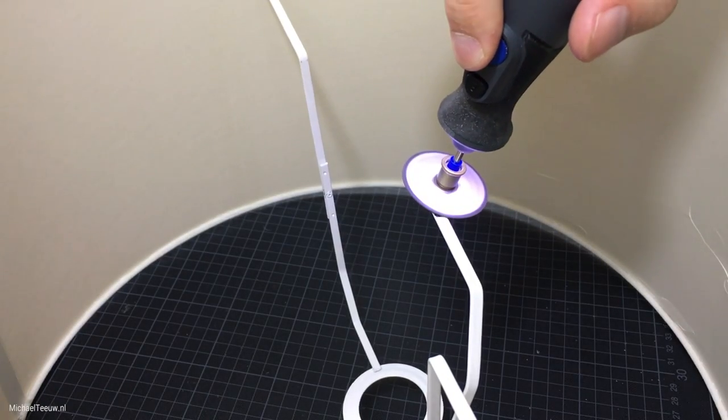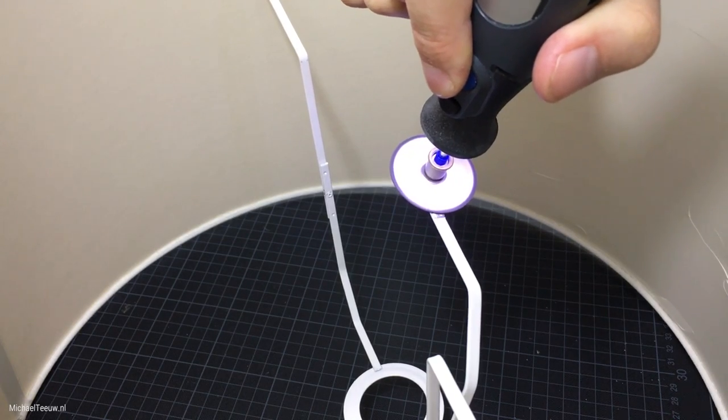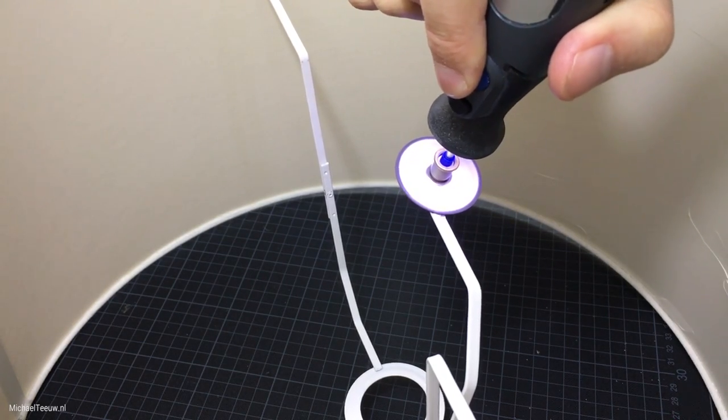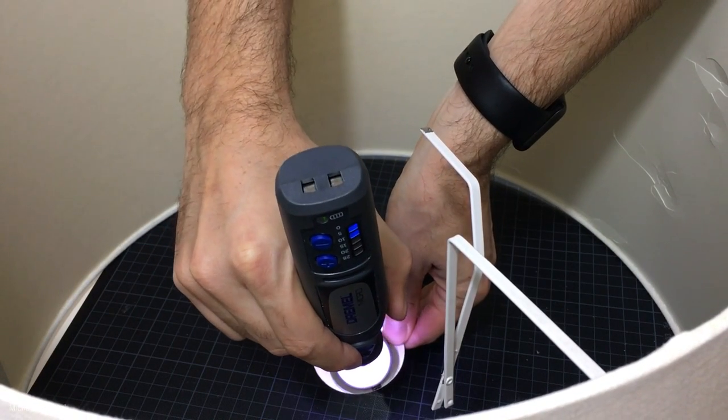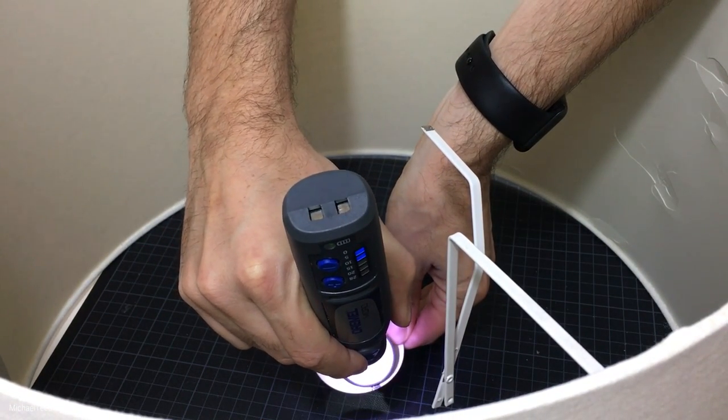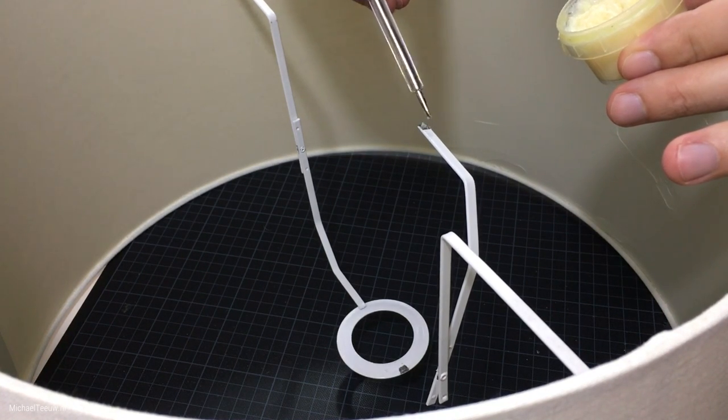First, let's start with a little bit of sanding. A little bit of flux helps the solder to do its work.